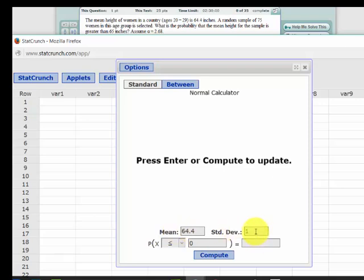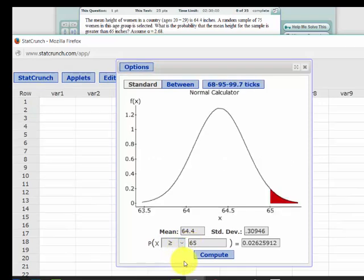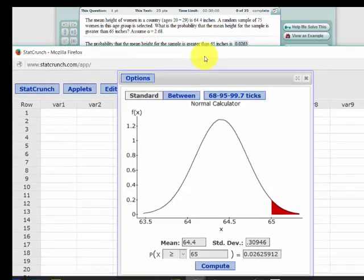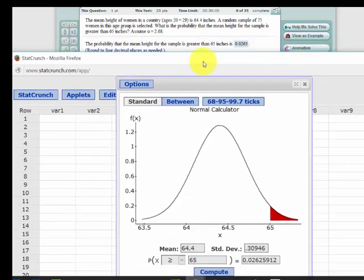The sample standard deviation is 0.30946, and we want to know the probability of being greater than 65 inches. Calculate that, and it's 0.0263. Let's see if that's the answer they got. Son of a gun.